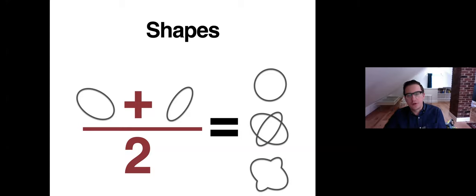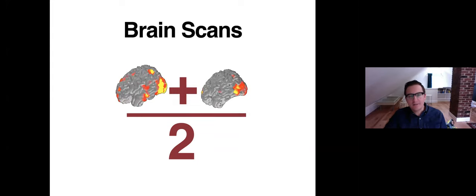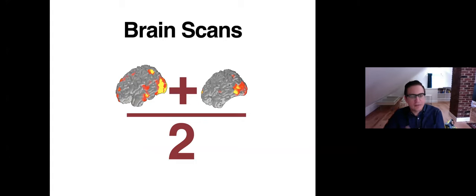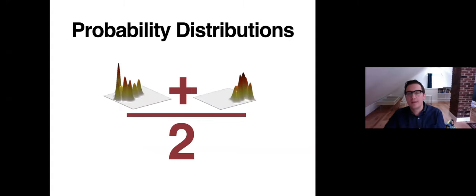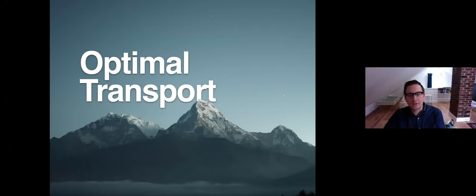The real world is even more complicated. For example, you could have a bunch of patients and want to understand what the average brain scan is. Or you could be interested in averaging faces. All these questions can be recast as averaging probability distributions — and that will be the main topic. To understand this, we need to make a detour into optimal transport.